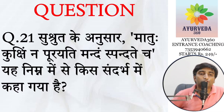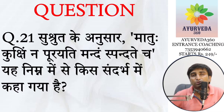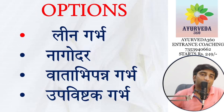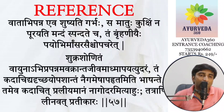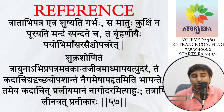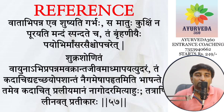The next straightforward question asks which Garbha Vyapath is mentioned by Acharya Susruta — whether it is Lena, Nagodara, Vatabhi Panna, or Rupavishtaka. The straight answer is Vatabhi Panna Garbha. The reference reads: Samathu Kukshim — Vatabhi Panna Eva Shishyati Garbha. This is from the tenth chapter of Sharidastana in Susruta Samhita.